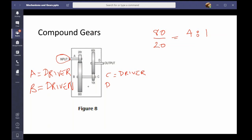And then we've got C to D, so again driven over driver, so D over C. And that was obviously B over A. D over C, 60 divided by 10, which is equal to 6 or 6 to 1.